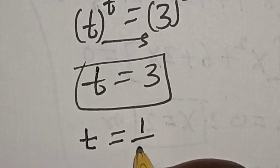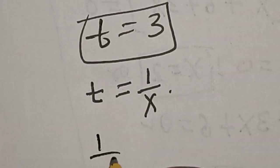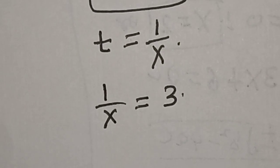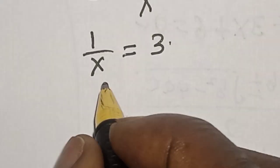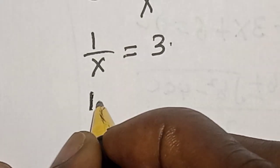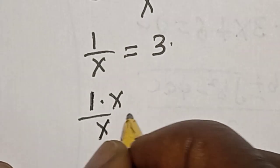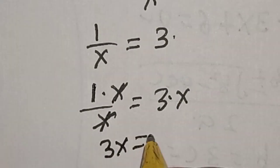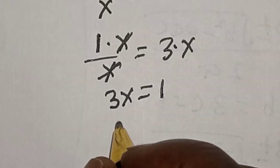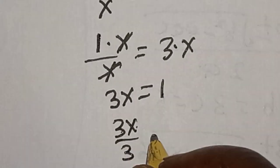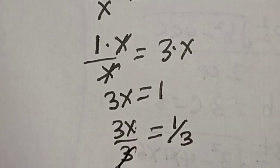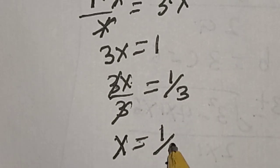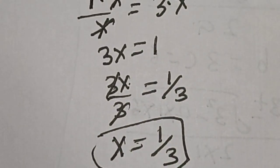Therefore 1 over x is equal to 3. Let's cross multiply — multiply both sides by x. We have 1 times x divided by x is equal to 3 times x. This one will cancel, then 3x is equal to 1. Let's divide both sides by 3. We have 3x divided by 3 is equal to 1 divided by 3. This cancels, therefore x is equal to 1 divided by 3. That is the value of x.